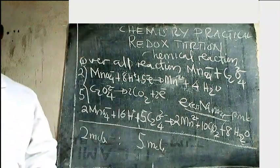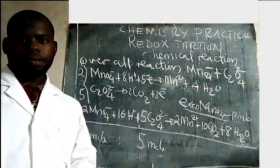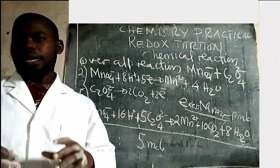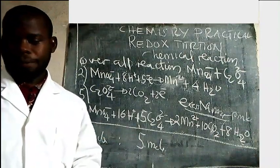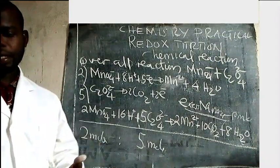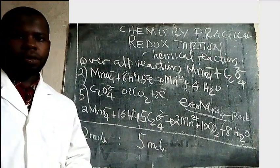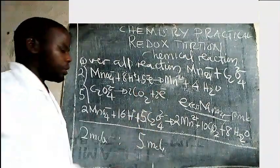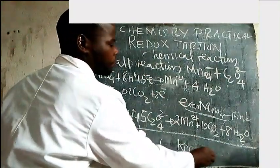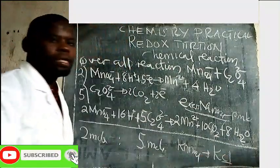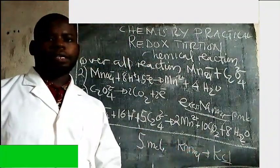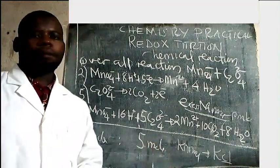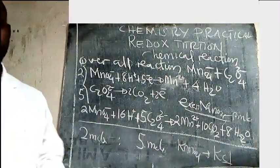Another question: why do we use sulfuric acid instead of hydrochloric acid or nitric acid? Because nitric acid is an oxidizing agent — it will oxidize compounds itself and disturb the reaction. Hydrochloric acid reacts with potassium permanganate to produce chloride, which is also an oxidizing agent and is volatile. That is why we use sulfuric acid — the other acids can disturb the reaction.